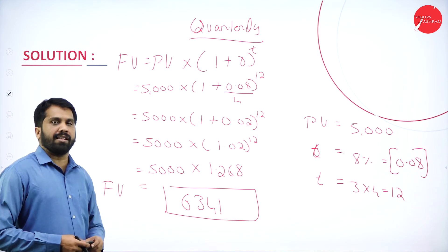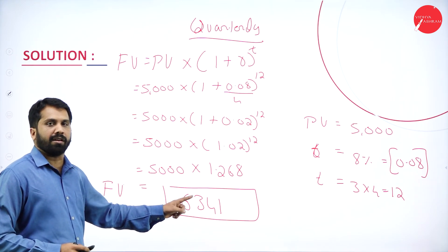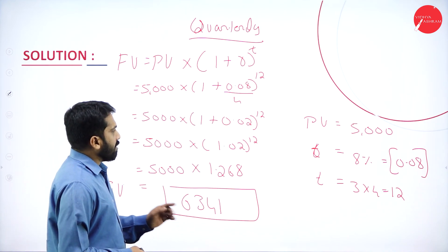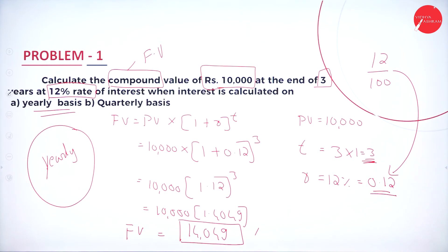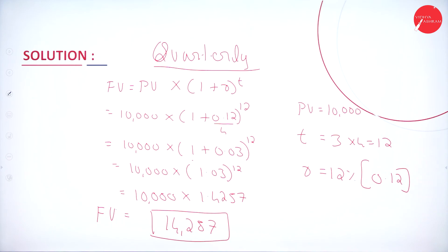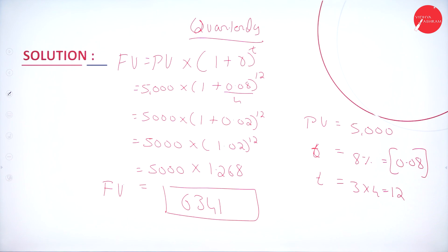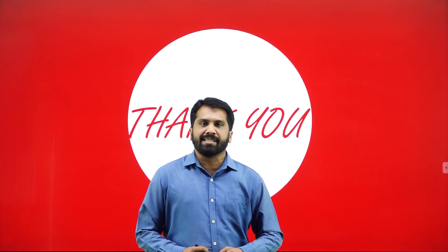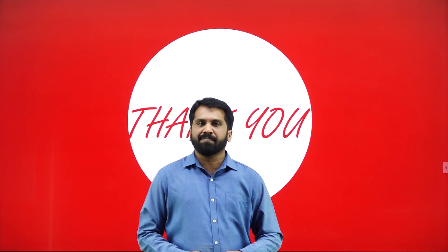This completes your quarterly basis for Problem 2. The answers will never be the same for yearly and quarterly — there is always a difference of around 150 to 200 rupees. You can take a screenshot of Problem 1 yearly, Problem 1 quarterly, Problem 2 yearly, and Problem 2 quarterly answers. In the next session we will cover present value problems and one more future value problem. Thank you.